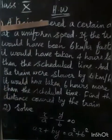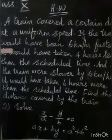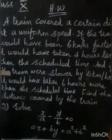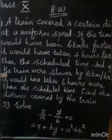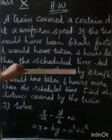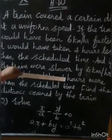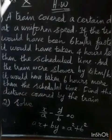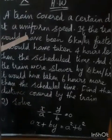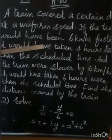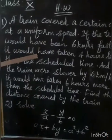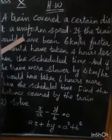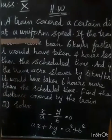A train covered a certain distance at a uniform speed. If the train would have been 6 km per hour faster, it would have taken 4 hours less than the scheduled time. And if the train were slower by 6 km per hour, it would have taken 6 hours more than the scheduled time. Find the distance covered by the train.